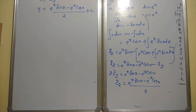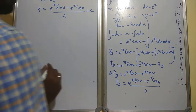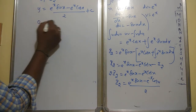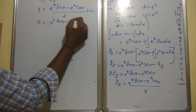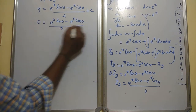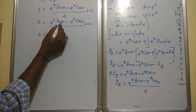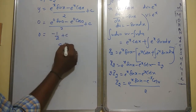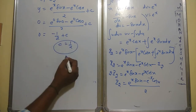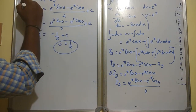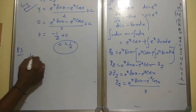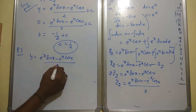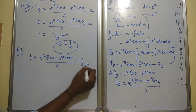General solution: y = (eˣ·sin(x) - eˣ·cos(x))/2 + C. Particular solution: x = 0, y = 0. Substituting: 0 = (e⁰·sin(0) - e⁰·cos(0))/2 + C = (0 - 1)/2 + C. So C = 1/2. Particular solution: y = (eˣ·sin(x) - eˣ·cos(x))/2 + 1/2.